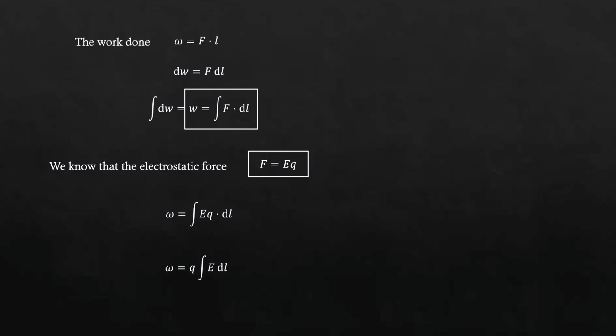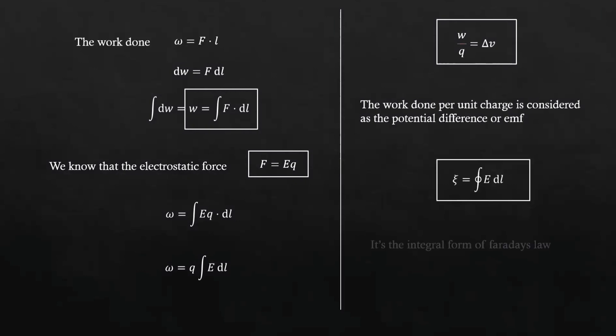We already know that W by Q is the potential difference, or we can also call it as EMF. Therefore, the EMF produced is given by ε equals integral E·dL, and this is the integral form of Faraday's law.